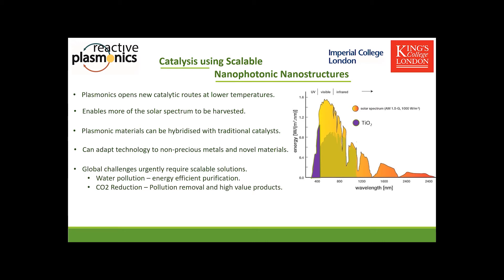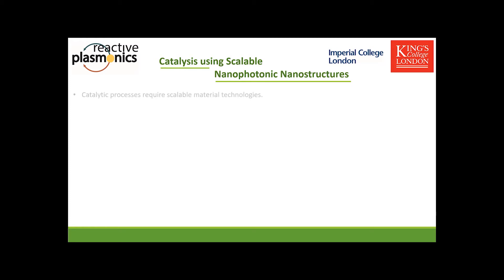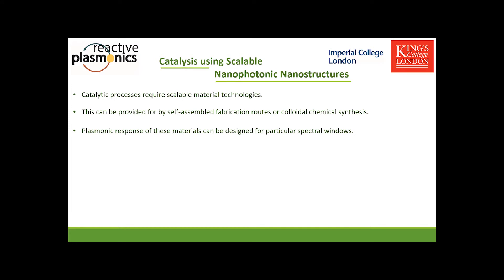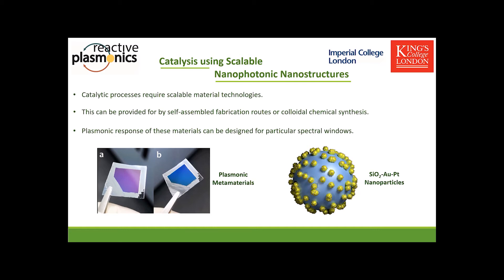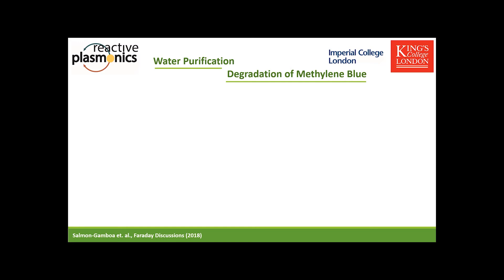The global challenges I'd like to discuss are water pollution and CO2 reduction, which urgently require scalable solutions. Catalytic processes therefore require scalable material technologies, provided by self-assembled fabrication routes or colloidal chemical synthesis. Both techniques allow materials to be designed for particular spectral windows, allowing control of hot carrier energy. The two classes of materials are self-assembled plasmonic metamaterials, shown on the left as typical laboratory samples around one centimeter squared, and colloidal plasmonic nanoparticles comprised of a silicon dioxide core decorated with both gold and platinum on the outside.